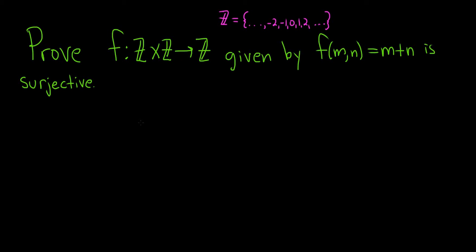Let's briefly recall what it means for a function to be surjective. That is the most important thing in this proof is to understand the definition. So we say f from A to B, where A is the domain and B is the codomain, is surjective if, and basically for every element in the codomain.